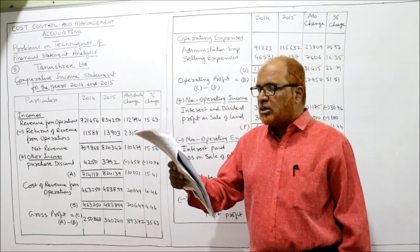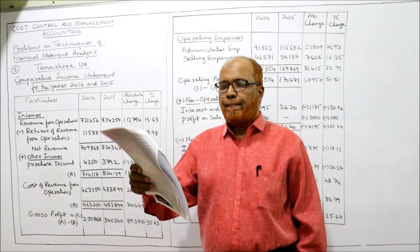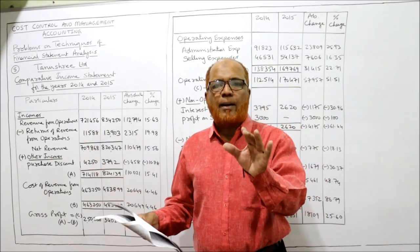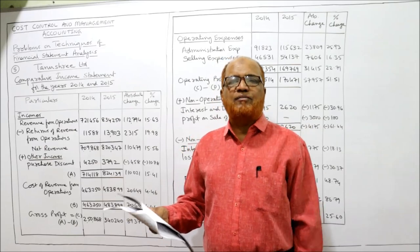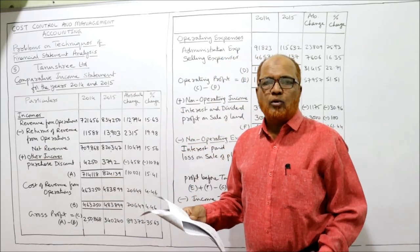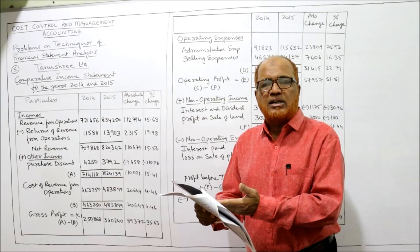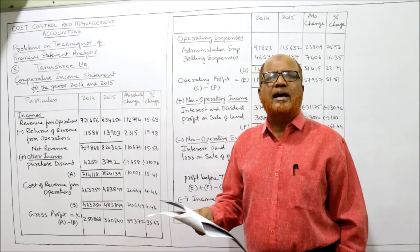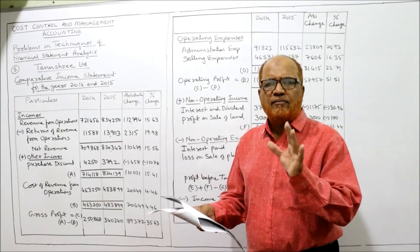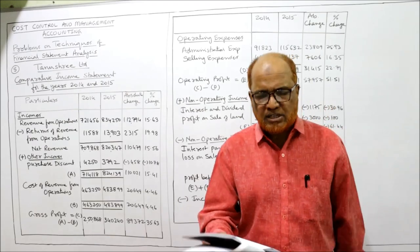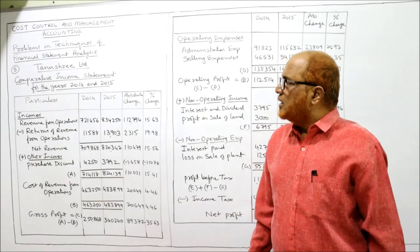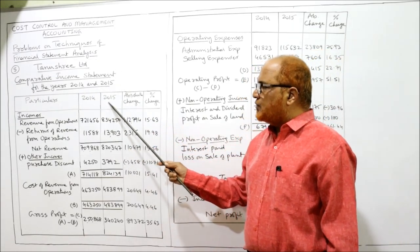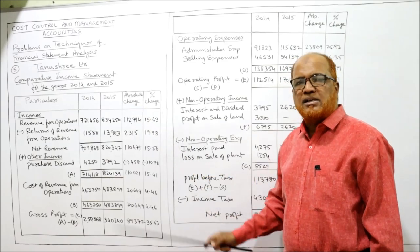The problem asks you to present the above data in suitable comparative form — that is, comparative income statement form. So we have to make comparative for only two years: last year 2014 and current year 2015. It is not asking you to give the interpretation, so simply we are making the comparative income statement. Comparative income statement for the year 2014-15, with columns for absolute change and percentage change.